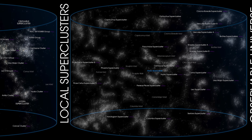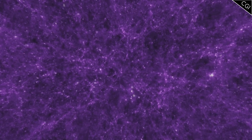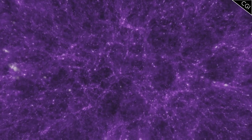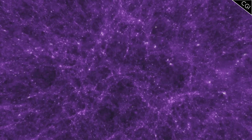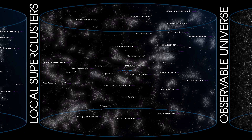Zooming out once more, we start to see this banding happening on a grand scale. At these kinds of distances, we begin to see that the universe tends to have a kind of web or filament structure, made of galaxies. In between these huge clusters and filaments, stretching for hundreds of millions of light years, are super voids.